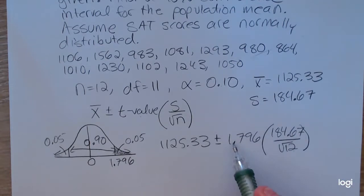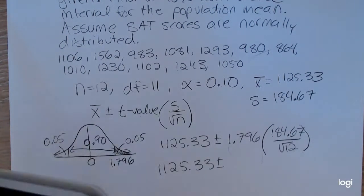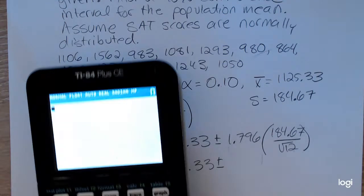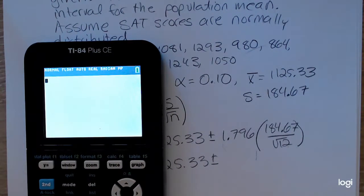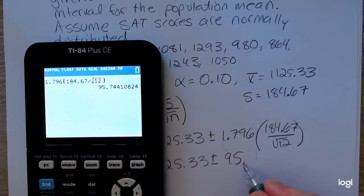All right, this piece right here will be our margin of error. And I can find that piece separately. So entering into my calculator, I have 1.796 times 184.67 divided by the square root, 12. All right, so this margin of error is approximately 95.74.